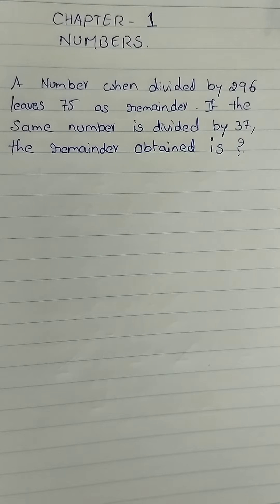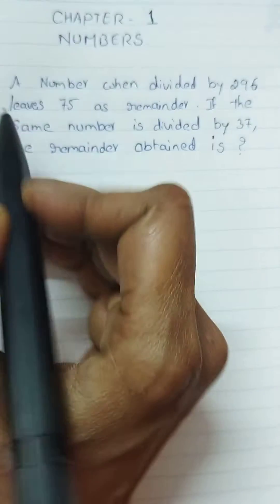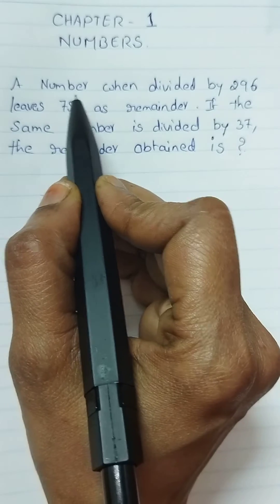Hi, today's question is: a number when divided by 296 leaves 75 as remainder. If the same number is divided by 37, the remainder obtained is? Now we have to find out the remainder here.